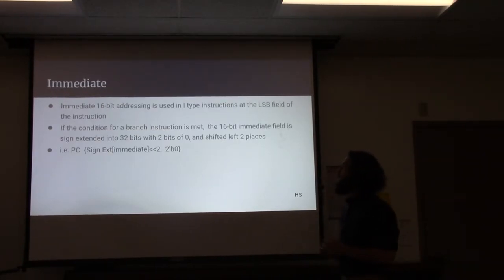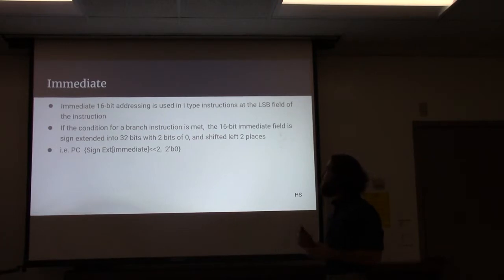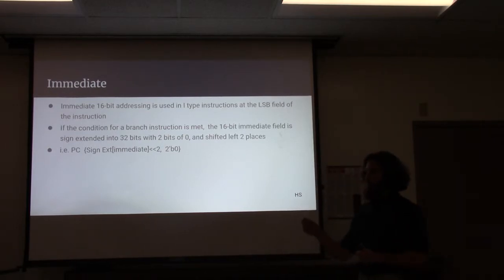For the immediate addressing, this is used in I-type instructions at the least significant 16-bits of the instruction. If a condition for a branch instruction is met, the 16-bit immediate field is sign-extended to 32-bits. So we take bit 16, sign-extend it, and we add two bits of zero and shift it left two times.